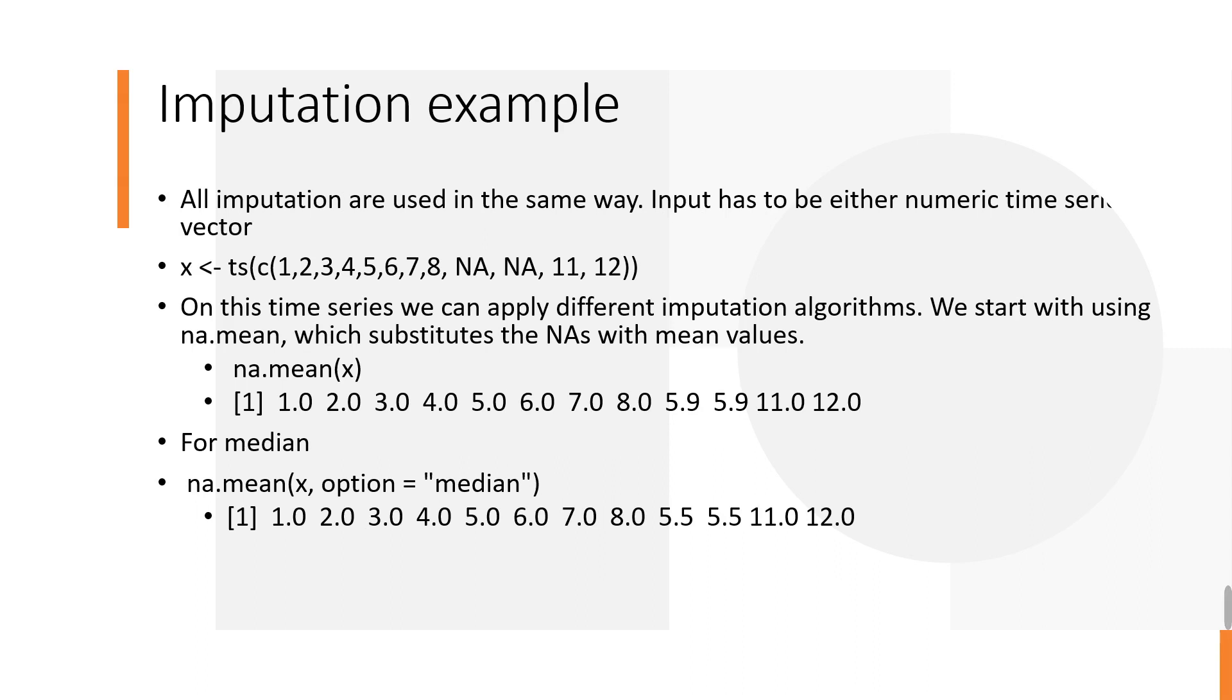We're going to start with a very simple example. Let's say we have a time series information on integers from 1 to 12, where we have two missing values. We have x equals to TS, which stands for time series. That is the function to define time series. Then we have a set of integers from 1 to 12.